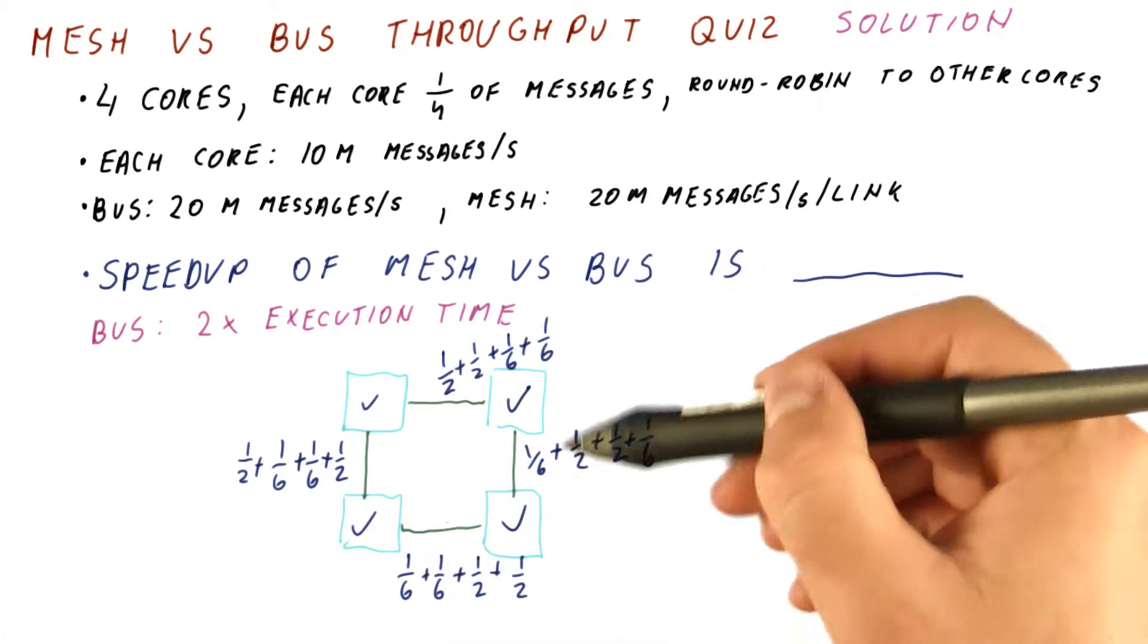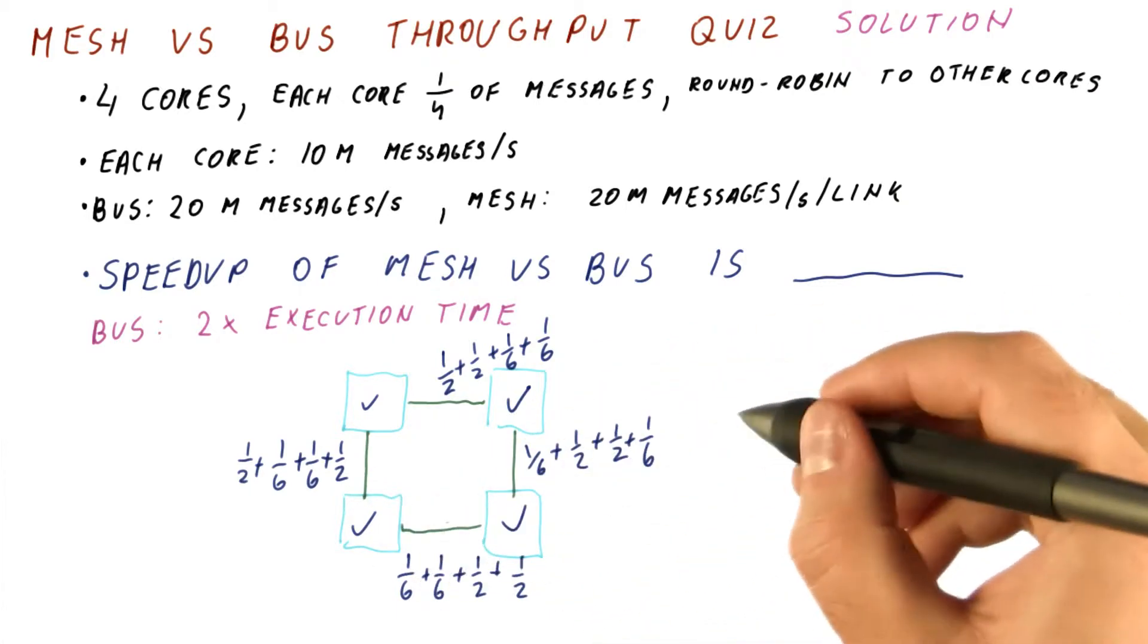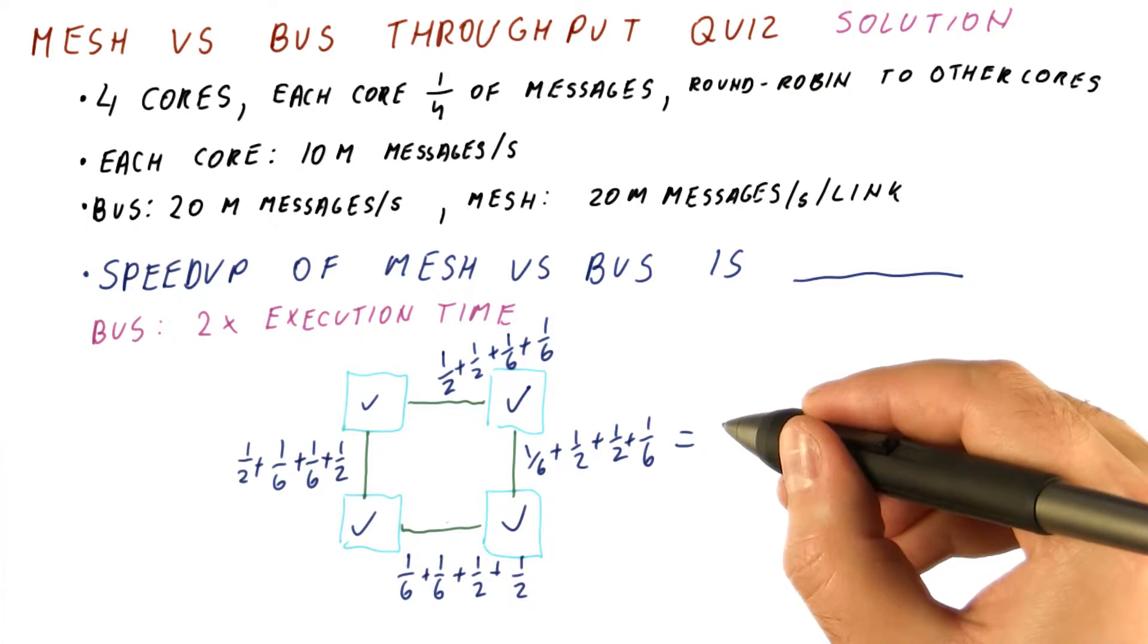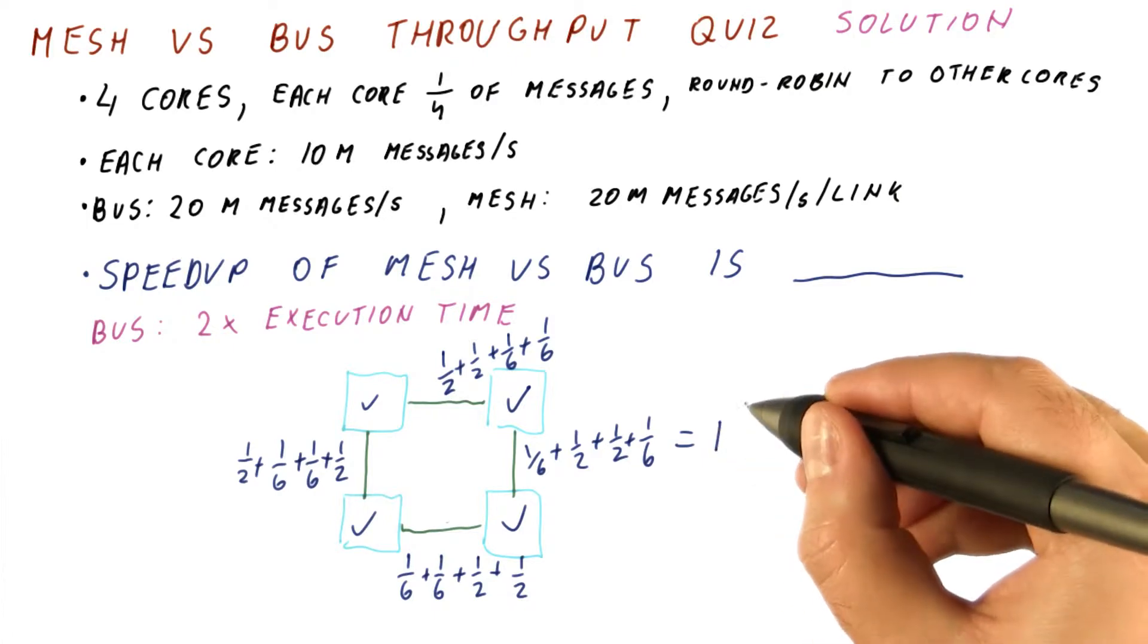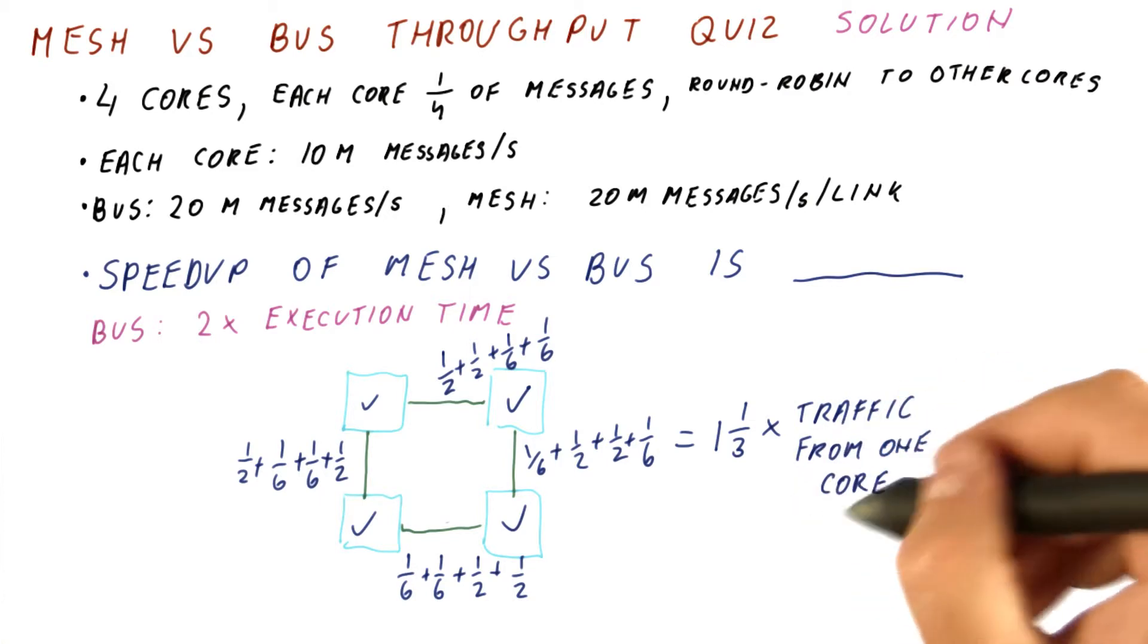So as you can see, our links are actually evenly used. Each of them gets two times one half plus two sixths. So we get one and one third times the traffic generated by one core. That was what the one half was off.